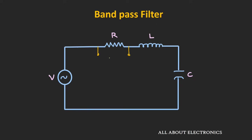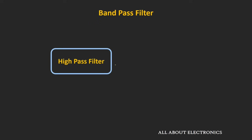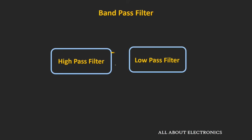For more information, you can check that video. But in this video, we will learn how to design this bandpass filter just by using a high pass and a low pass filter. Just by cascading the high pass filter and the low pass filter, we can design this bandpass filter.